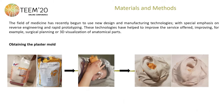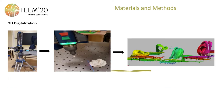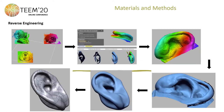To begin with the realization of the prosthesis, first the model of the patient's healthy ear must be obtained. Afterwards, we proceed with 3D digitalization, where the physical mold is transformed into a virtual mold. Then comes post-processing, where possible defects of the 3D scans are corrected.